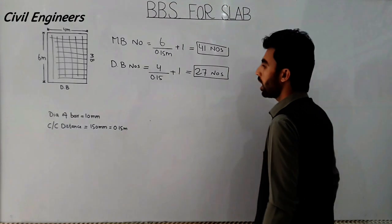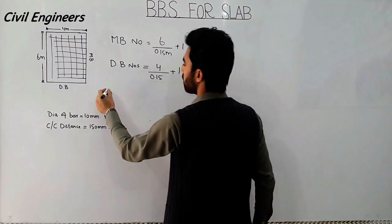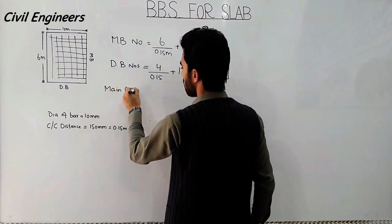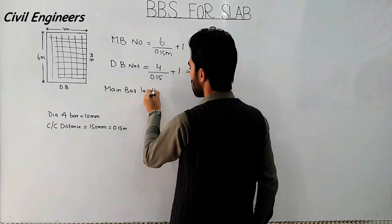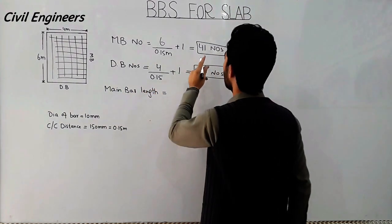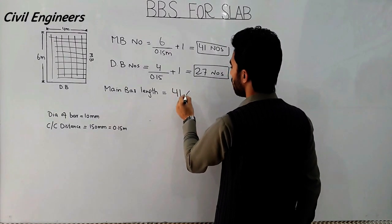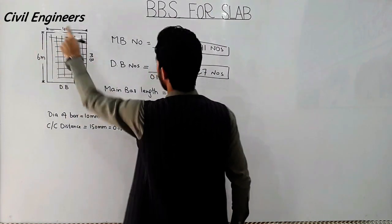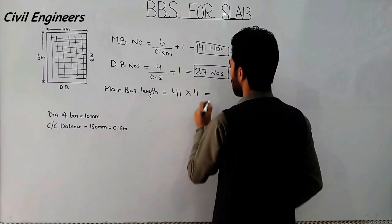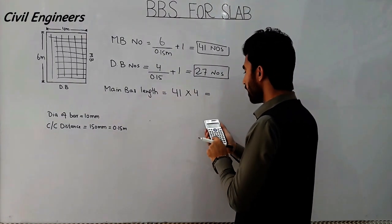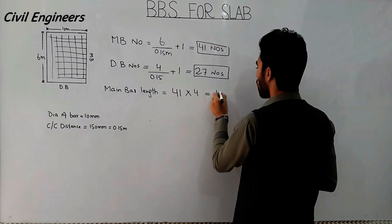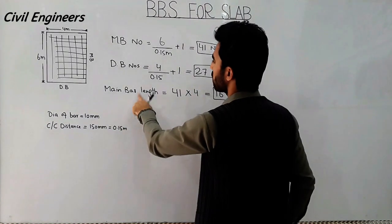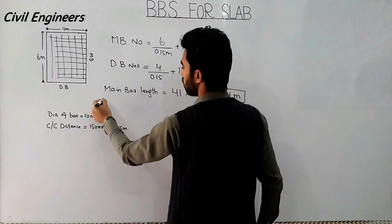Now I will find out the main bars length. The number of main bars is 41 and the length of every bar is 4 meters, because we are placing them across the breadth. So, 41 multiplied by 4 meters equals 164 meters total length for main bars.